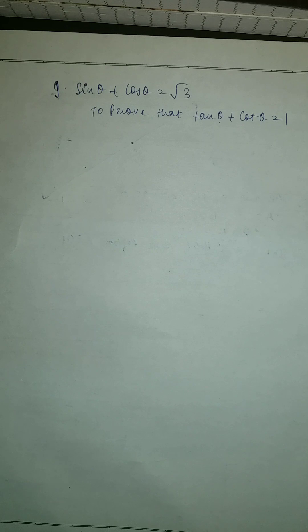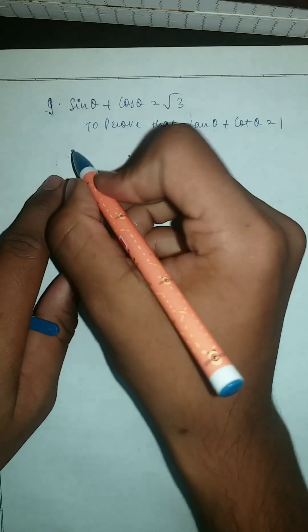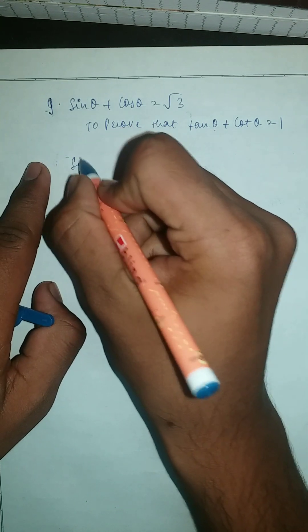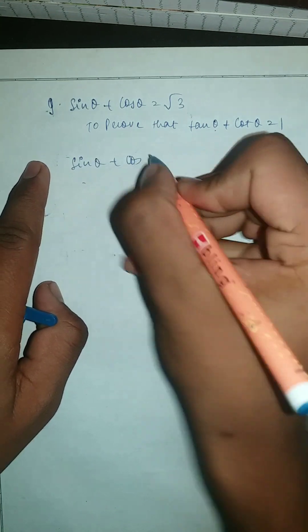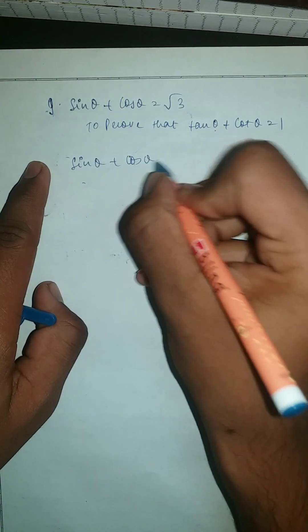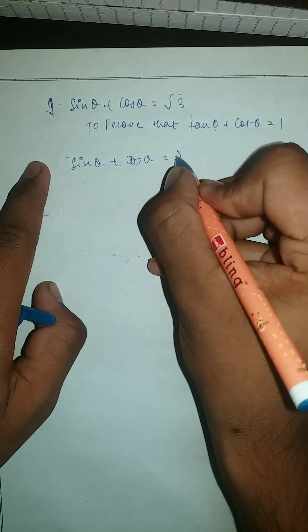Here, let's see how to do this question. It's a very good question of trigonometry, categorized as you know. So first, as you can see, we're going to take sine theta plus cos theta is equal to root 3.